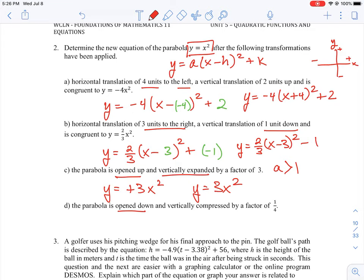It opens down and it's vertically compressed by a factor of 1 quarter. So vertically compressed means that it's going to be squashed towards the x-axis. And by a factor of 1 quarter. So we can just simply write it as y is equal to minus 1 quarter x squared. Because that's going to open down. So that's how you translate those words into the values that you need to put into the general format for the parabola.